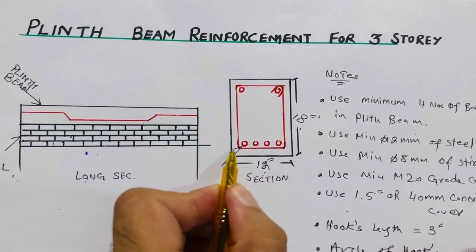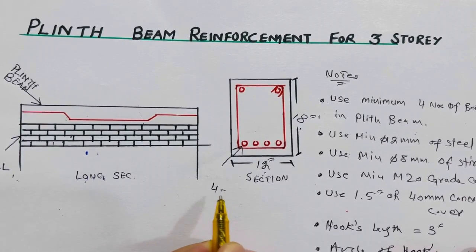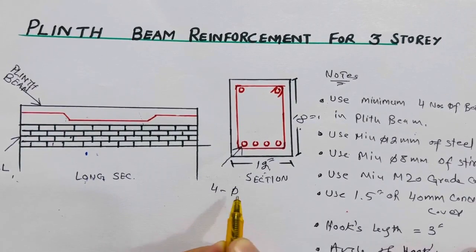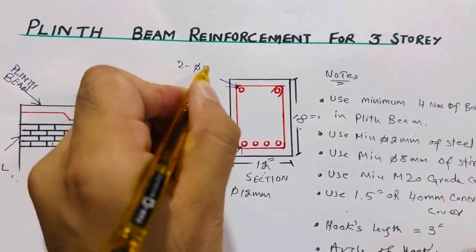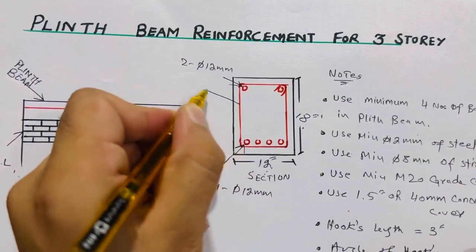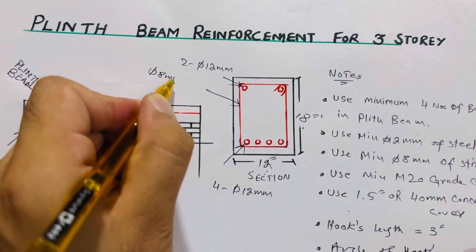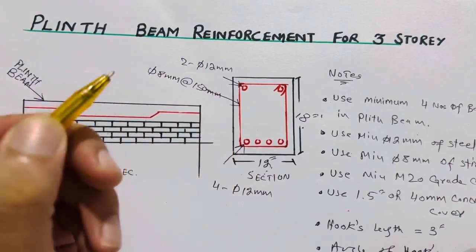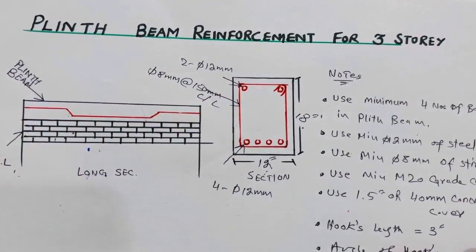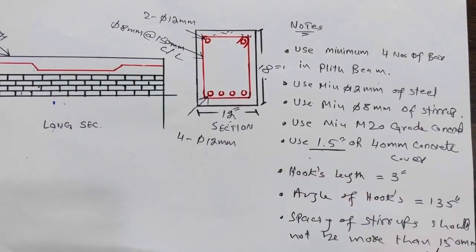We should use a minimum of four numbers of steel rods, and the diameter should not be less than 12 millimeter. Two bars at the upper portion should also be 12 millimeter diameter. For stirrups, use 8 millimeter diameter steel rod with a spacing of minimum 150 millimeter center to center. The concrete cover should not be less than 1.5 inches.